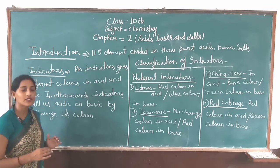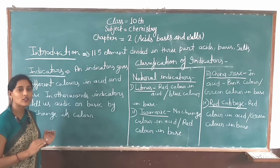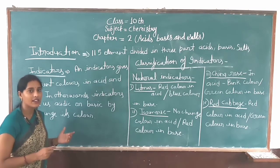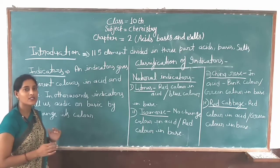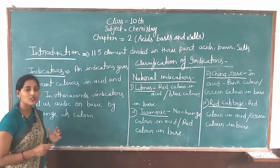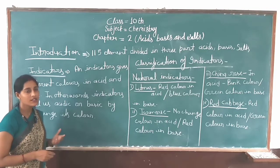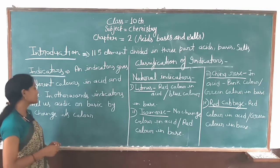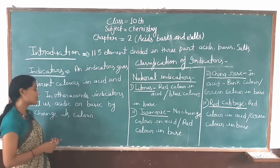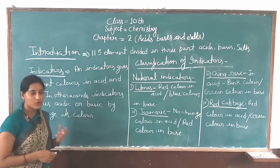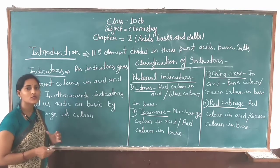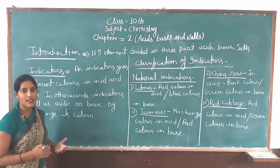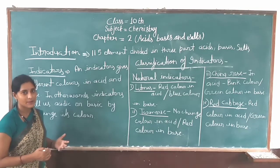So what do indicators do in acid and base? We give different colors in acid and base. We know that the solution is acidic or basic. In other words, indicators tell us whether a solution is acidic or basic by changing their colors. We can say that our indicator tells us whether the solution is acidic or basic.